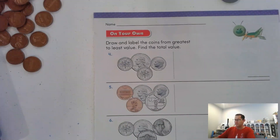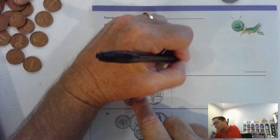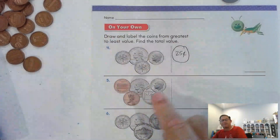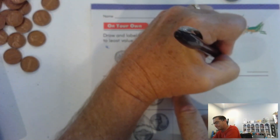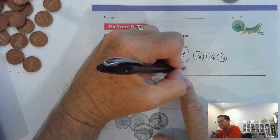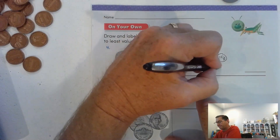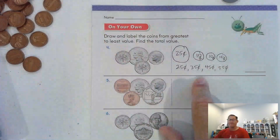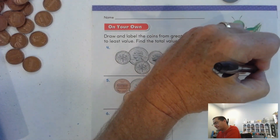Page 355 — we're continuing the same thing. I have a quarter and three dimes. The quarter is the largest at 25 cents, then the three dimes. Counting: 25, 35, 45, 55 cents.